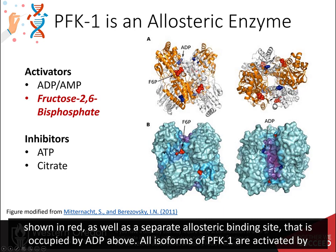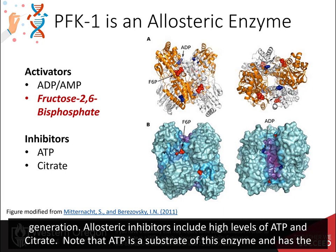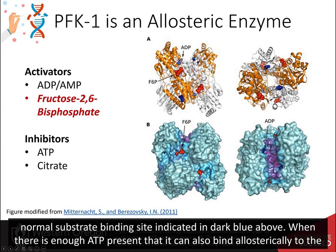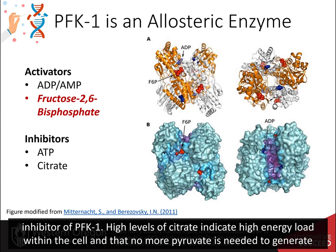All isoforms of phosphofructokinase 1 are activated by the allosteric binding of ADP or AMP, indicating a low energy state within the cell and the need for glycolysis and energy generation. Allosteric inhibitors include high levels of ATP and citrate. Note that ATP is a substrate of this enzyme with a normal substrate binding site indicated in dark blue. When there is enough ATP present that it can also bind allosterically to the enzyme, it will act as an inhibitor. Citrate, the first molecule in the citric acid cycle, can also act as an allosteric inhibitor of phosphofructokinase 1. High levels of citrate indicate high energy load within the cell and that no more pyruvate is needed to generate energy through oxidative phosphorylation.